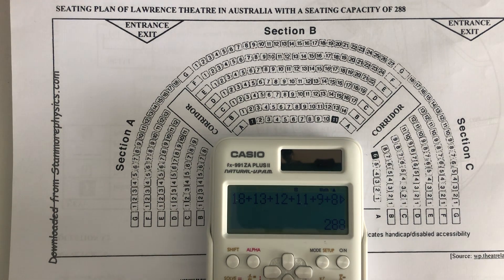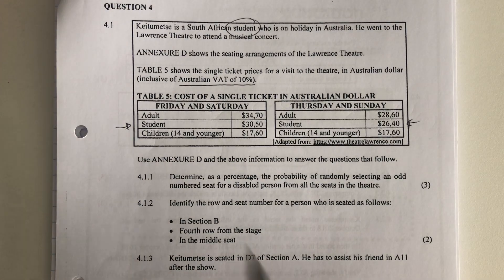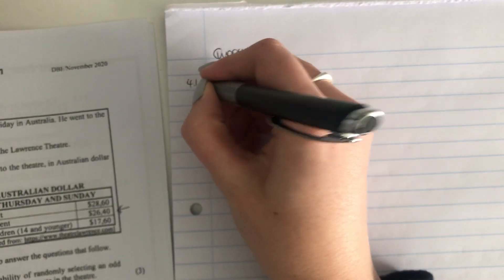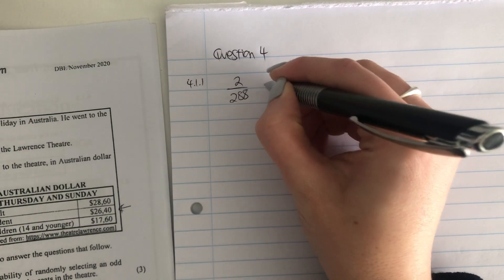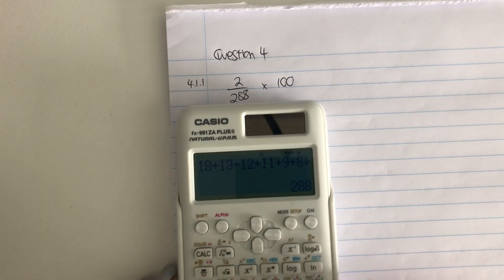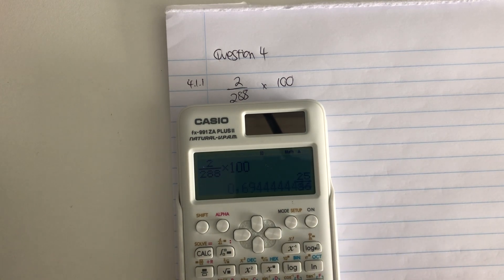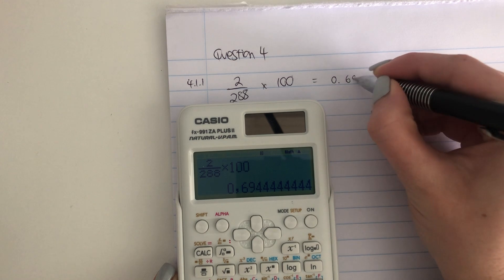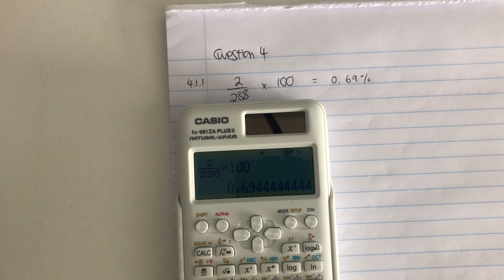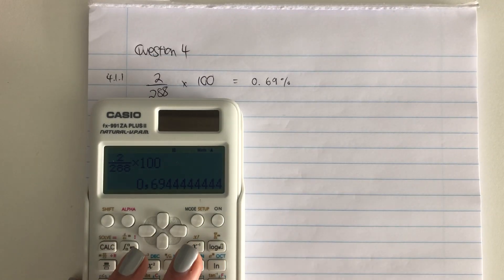The probability is 2 over the total number of seats, which is 288. They said to display it as a percentage, so we times by 100. Make sure you're starting on a new page. So it's 2 over 288 times 100. You get a mark for the 2, a mark for the 288, and a mark for your answer. 2 over 288 times 100 gives 0.69%. Generally, round to two decimal places. That would be your answer — probability is a common question.